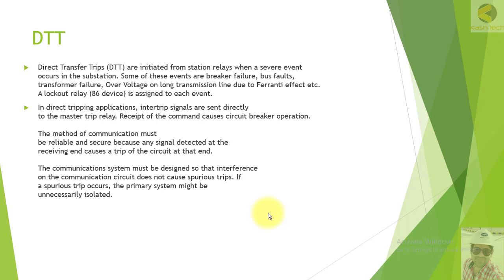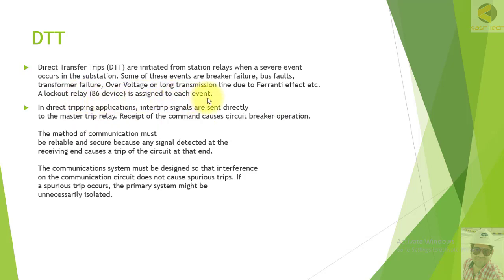Welcome friends. In this section we will study about Direct Transfer Trip scheme, in short named as DTT. Direct Transfer Trip schemes are initiated from substation relays when a severe event occurs in the substation. Some of these events are breaker failure, bus faults, transformer failures, or overvoltages on long transmission lines due to the Ferranti effect. A lockout relay 86 is assigned to each event.